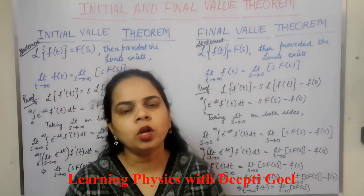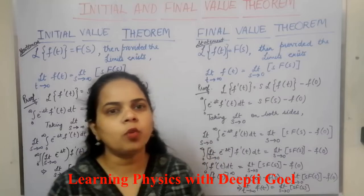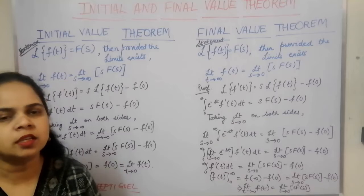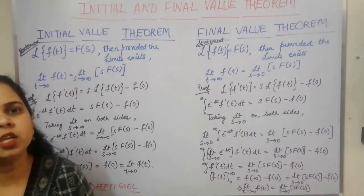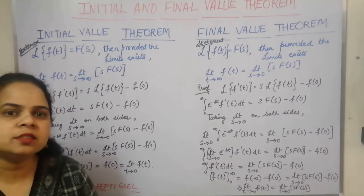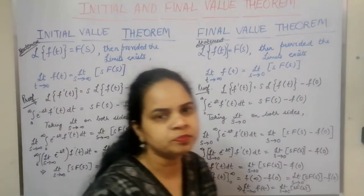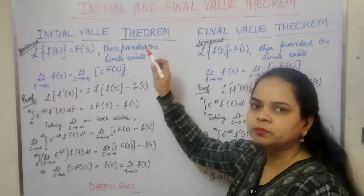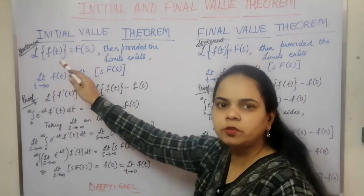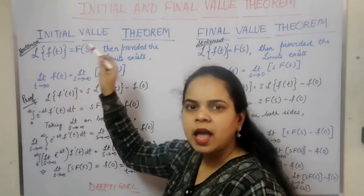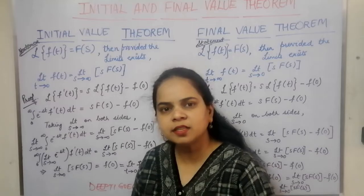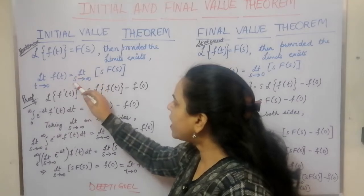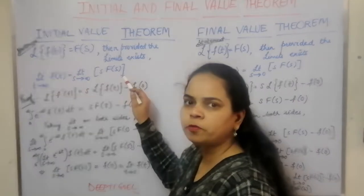So what do we mean by initial and final value? The initial and final value are related to the limits — that is whether the limit t is tending to 0 or whether the limit s is tending to infinity. We can see that the initial value theorem states: if the Laplace of the function is F(s) and the limits exist, then the limit t tending to 0 of f(t) is equal to limit s tending to infinity of s·F(s).